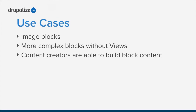A great use case for the Bean module is creating an image block - a block that has an image field with all the advantages that come with images, like different image styles. What if you want more complex blocks without views? Now you can build a block with four or five fields instead of pulling fields from different nodes. Also, content creators are able to build block content with granular permissions - someone can create an image block without needing full block system administration access. That's what we'll be covering throughout this series: all the reasons why you would want to use Context and Bean.